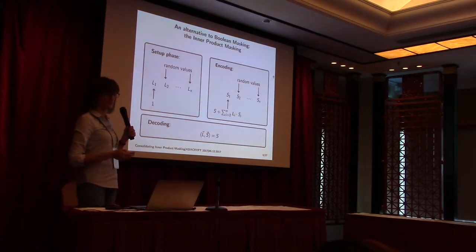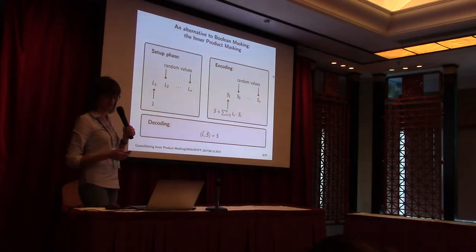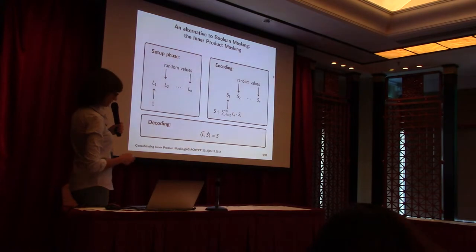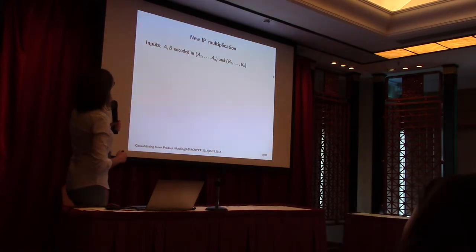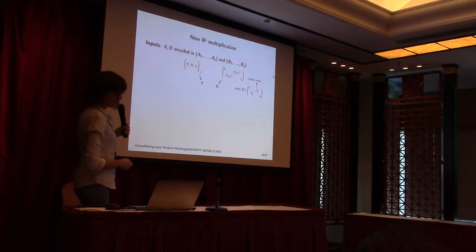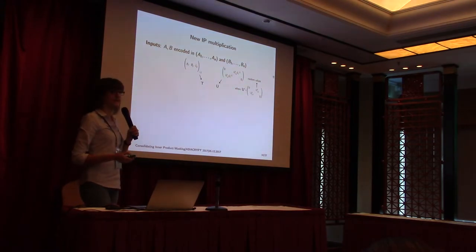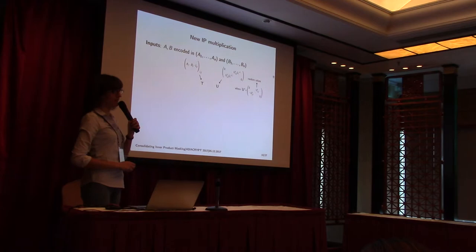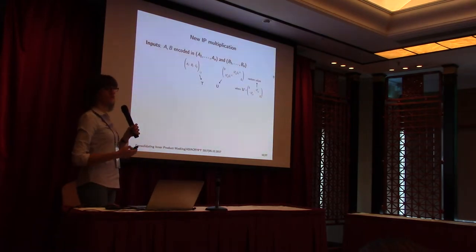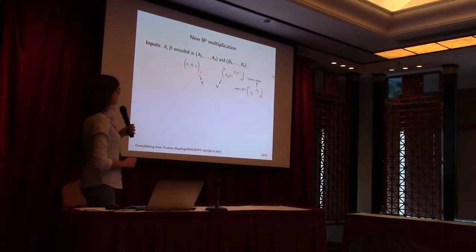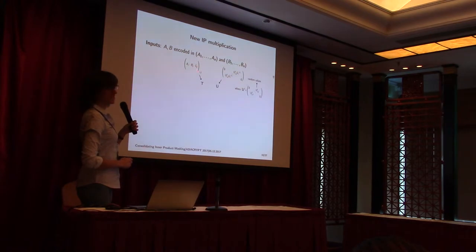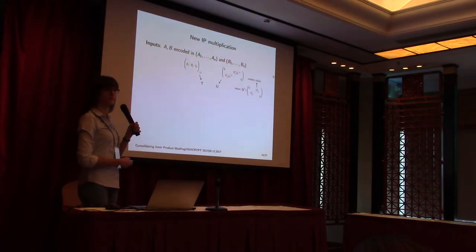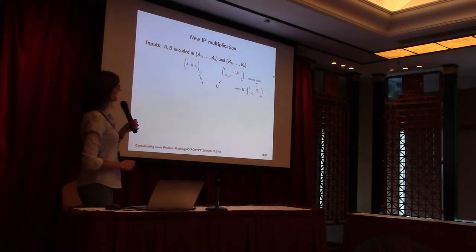I will now show our new multiplication scheme and explain why it's an improvement over prior works. The multiplication takes inputs A and B. We take a lot of inspiration from the ISW scheme. We have again a matrix T of inner products and a matrix U of random values. But this time we must take into account the presence of the shares Li to guarantee correctness. The matrix of inner products contains AI·BJ·LJ. For the random values, again we have random values appearing twice, constituting an encoding of zero, and all these random values must be multiplied by Li inverse.